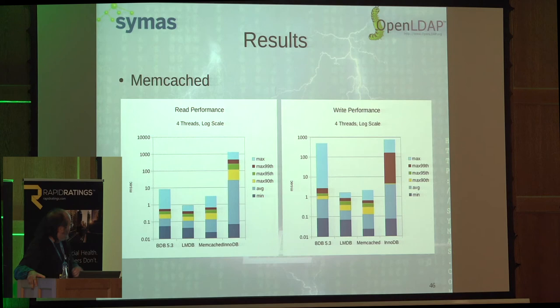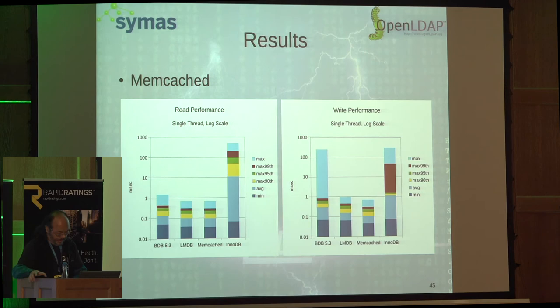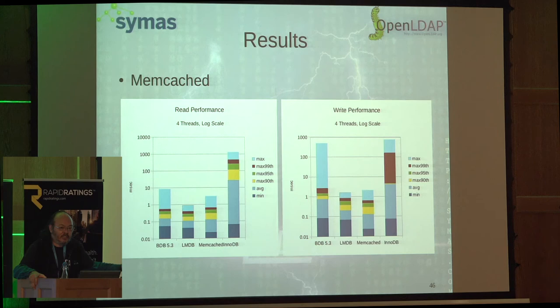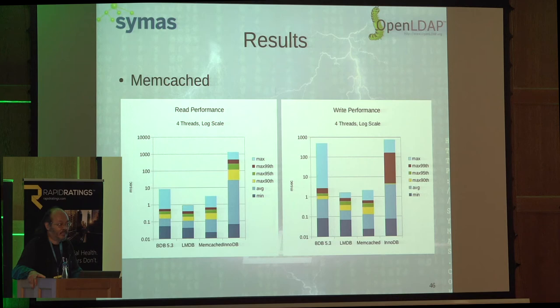The previous slide was a single thread; this one uses four threads. As you keep increasing the number of threads, the performance gap between LMDB and Memcache widens. Just for comparison, InnoDB is the main data engine used in MySQL, and in recent releases MySQL provides a Memcache interface to InnoDB — there's really not much reason you'd ever use that.